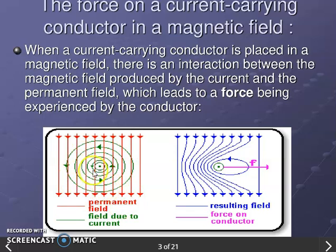The current-carrying conductor creates its own magnetic field in concentric circles around it. When we have two fields in one place, they interact with each other. As a result, a force is applied on the conductor, as shown in the second diagram.